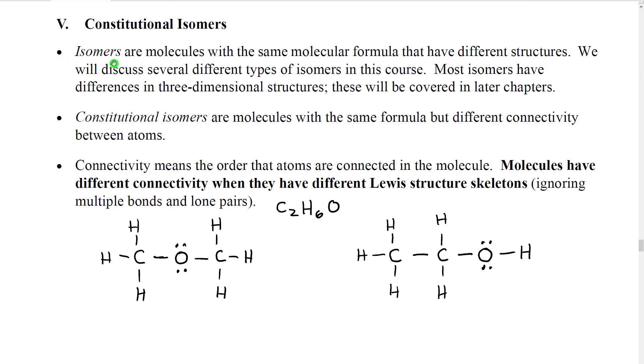So some terminology. Isomers is a general term that we use to indicate molecules that have the same molecular formula but different structures in some way. We're going to see that there are several different ways that molecules can be isomers. Most of those ways involve differences in the three-dimensional structure, and we're going to talk about those in a later chapter.